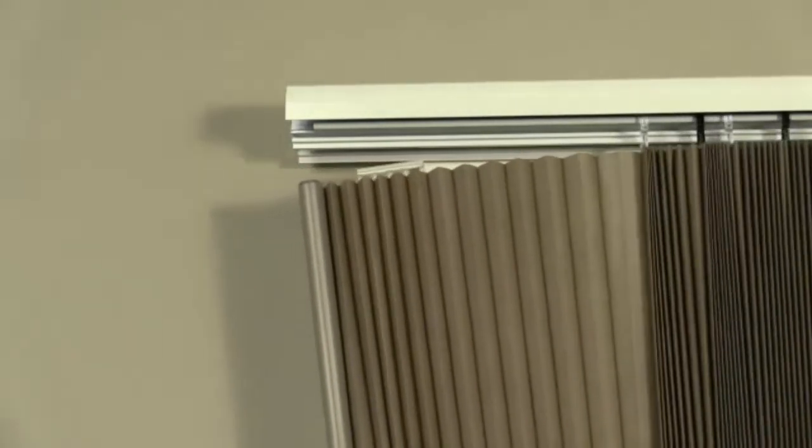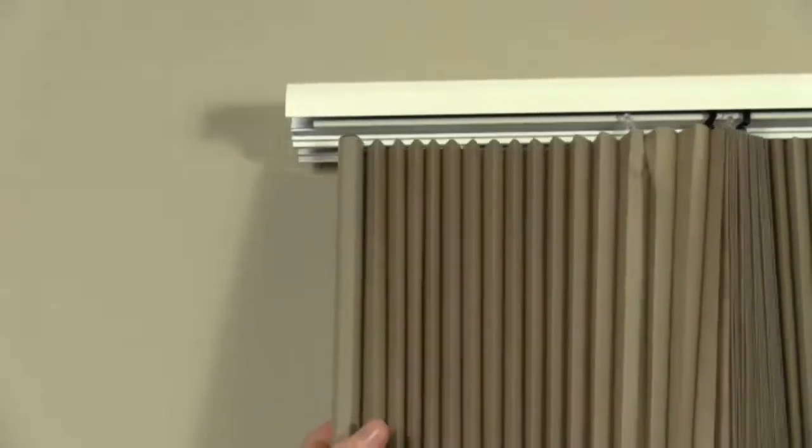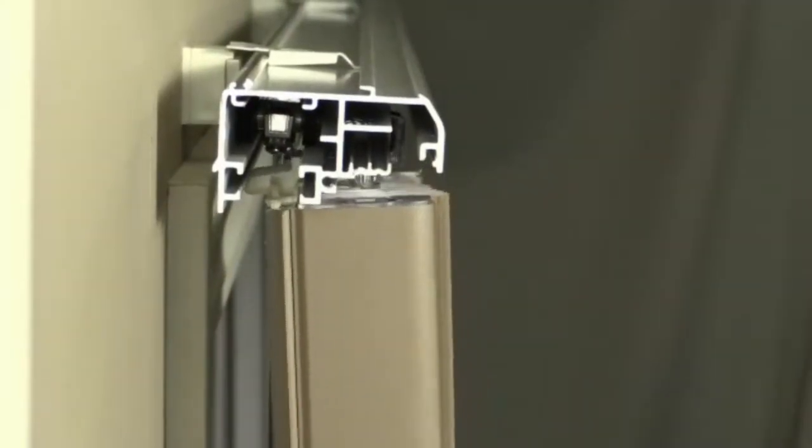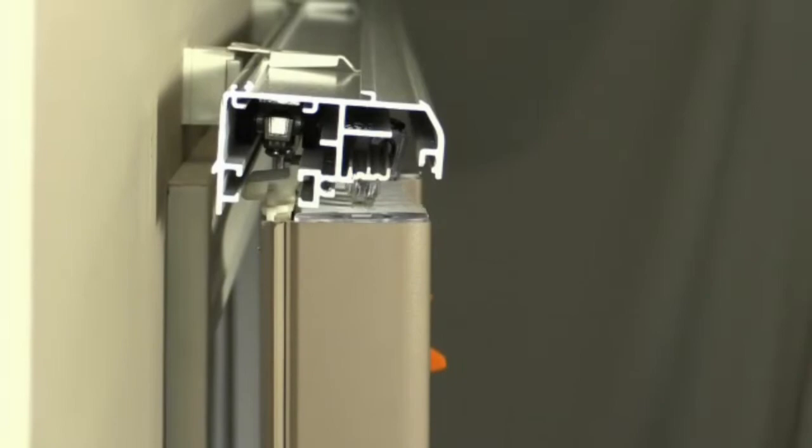hook the stationary rail bracket into place. Tilt the bottom of the stationary rail towards the front and hook the bracket to the head rail.